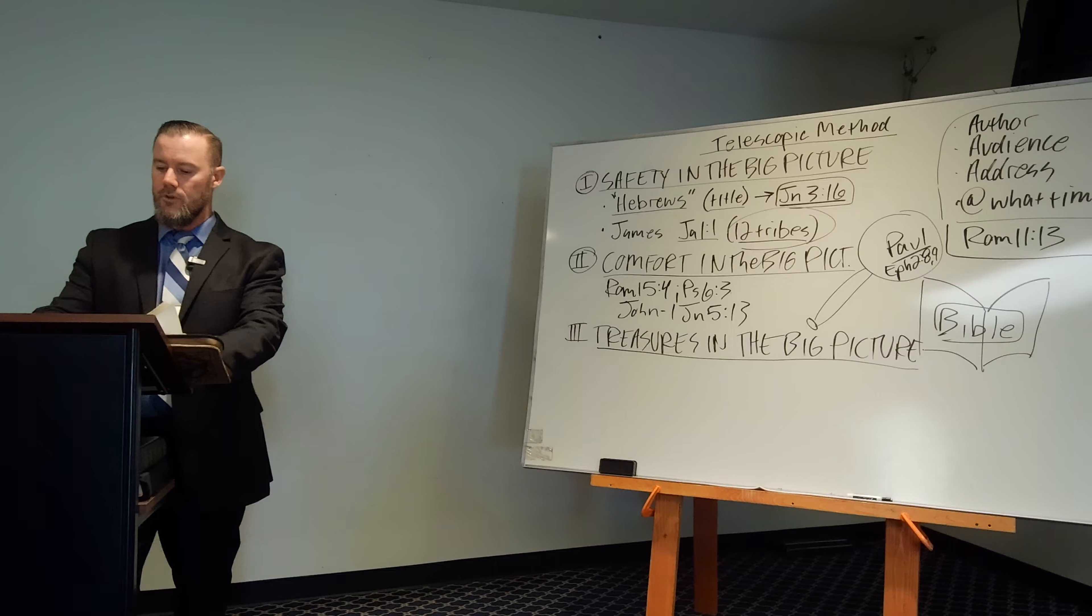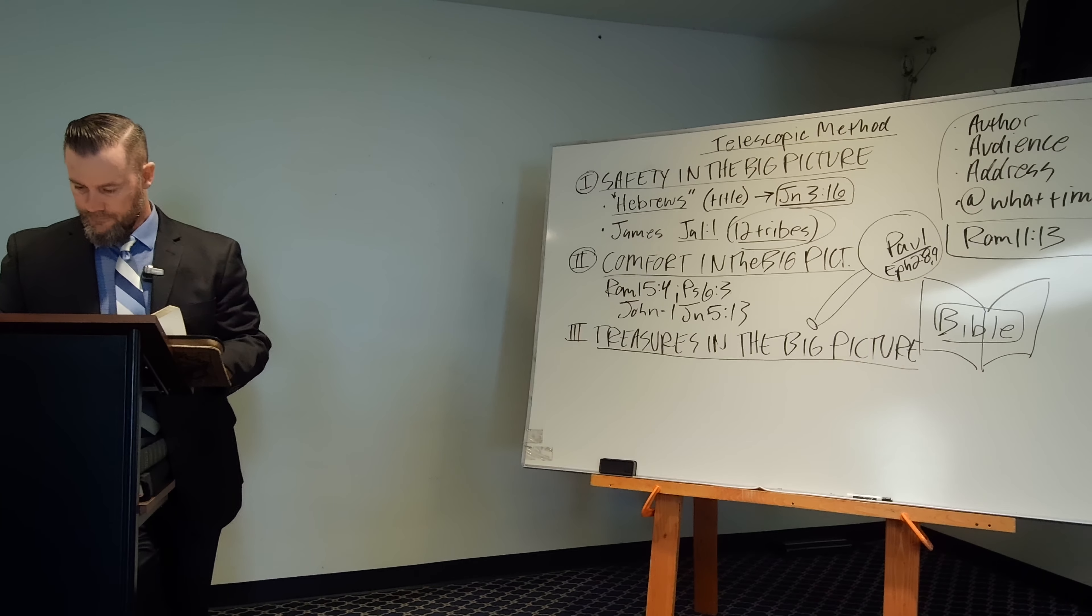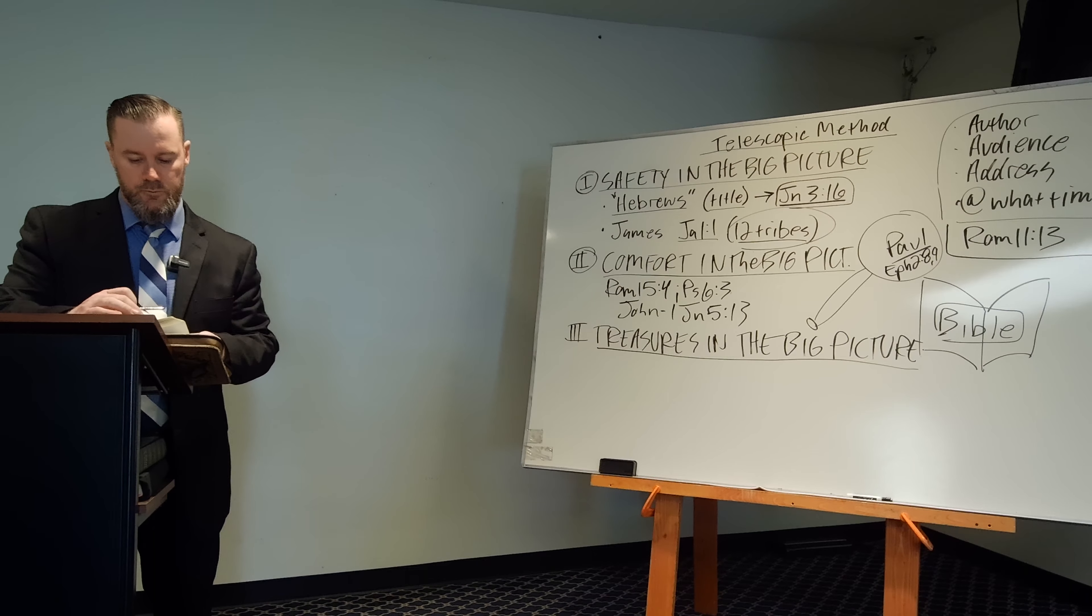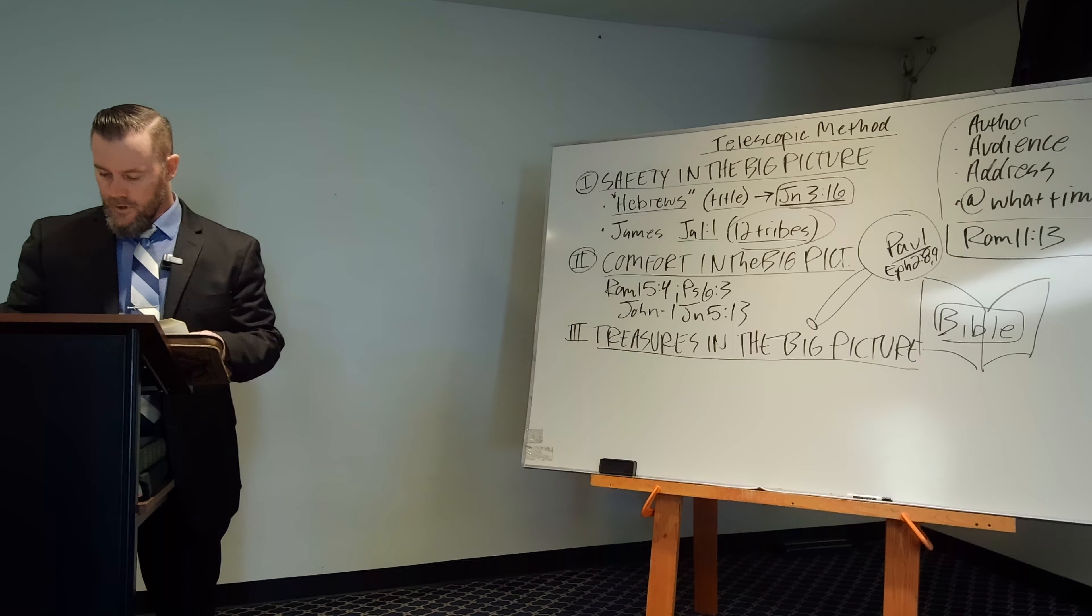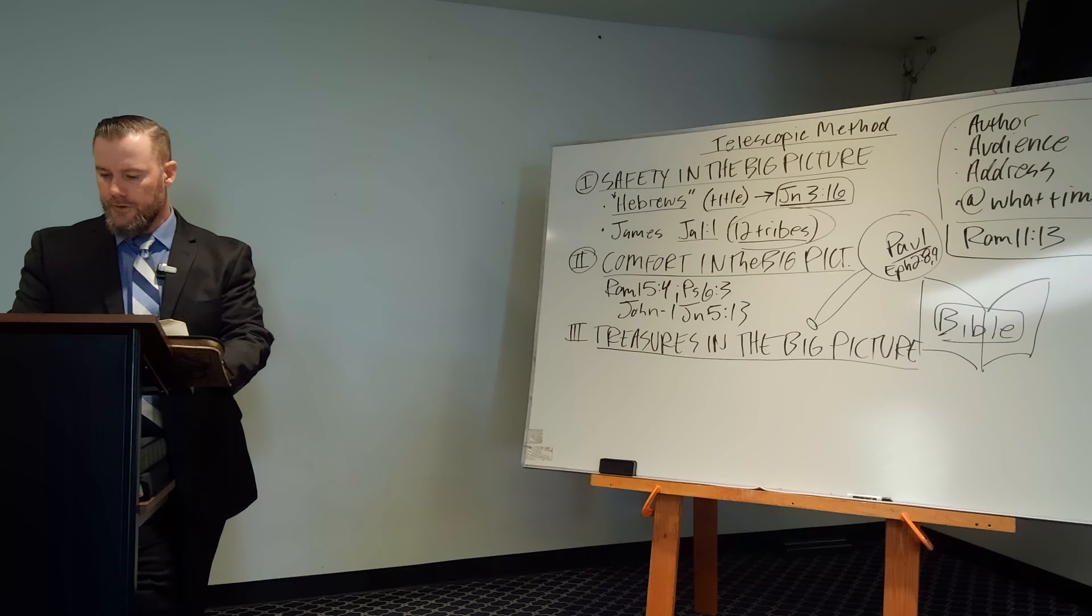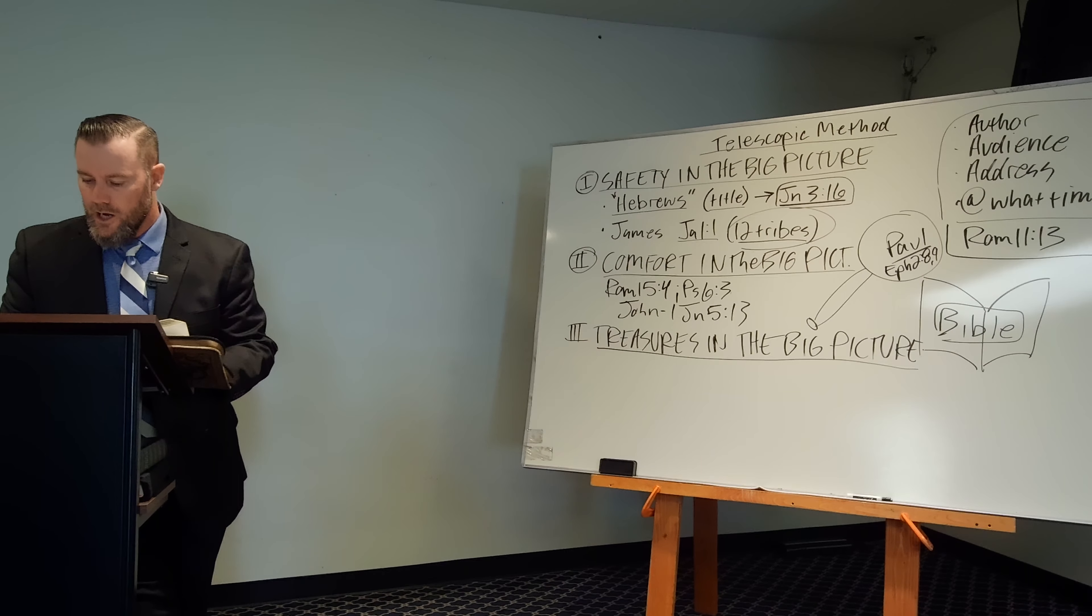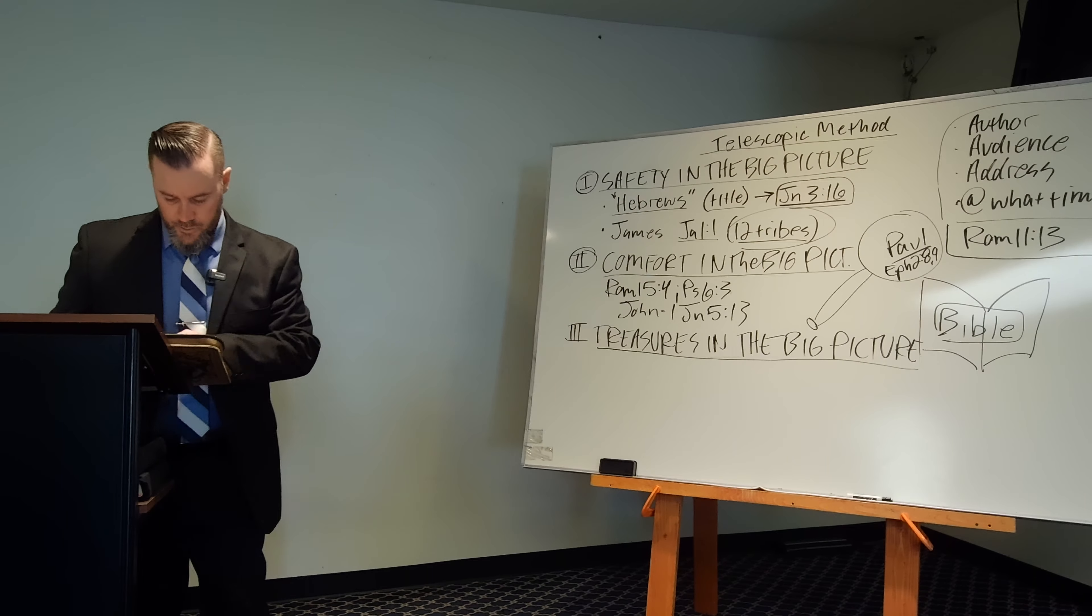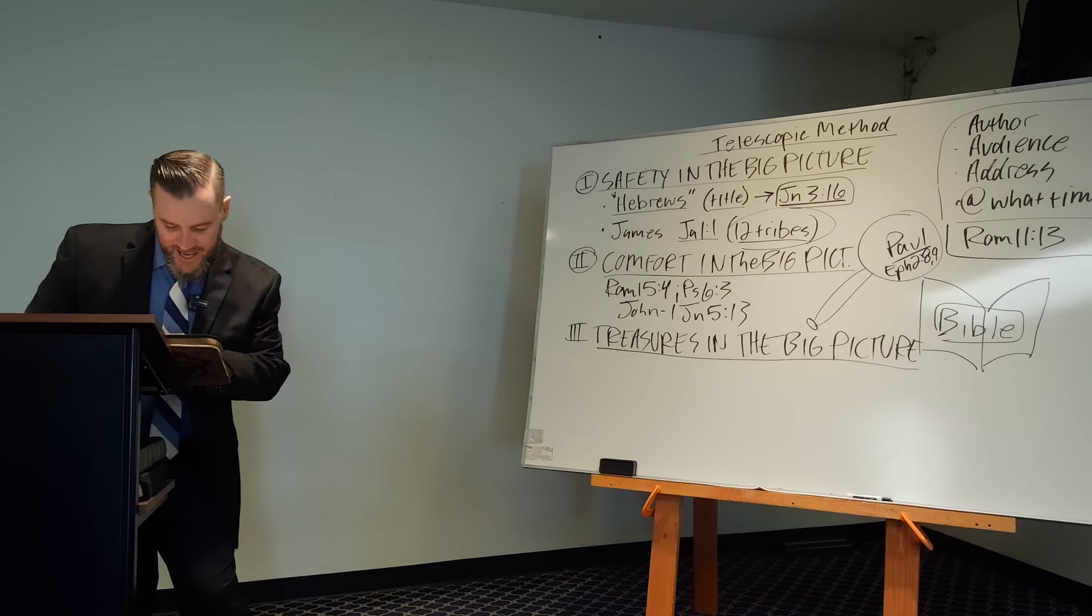I'll read it for sake of time. Revelation 12:5. And she brought forth a man-child who was to rule all nations with a rod of iron, and her child was caught up unto God and to his throne. Weird. What else we got here?